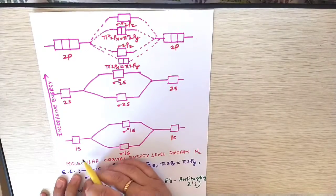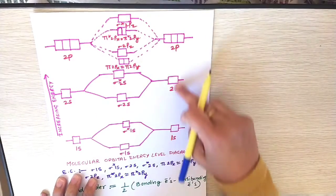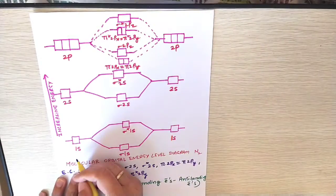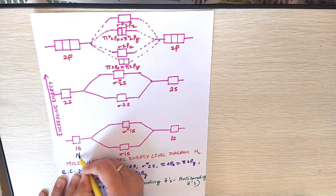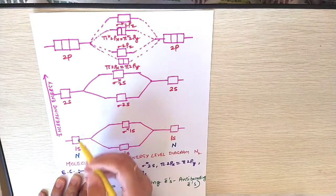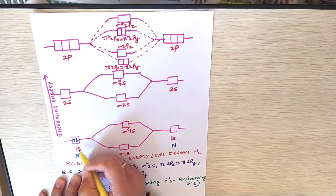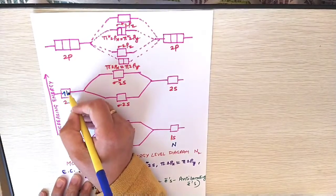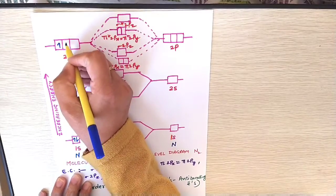Let us start filling the electrons for nitrogen molecule. First fill up the electrons in the nitrogen atom. Nitrogen atom has how many electrons? 7: 1s2, 2s2, 2p3.